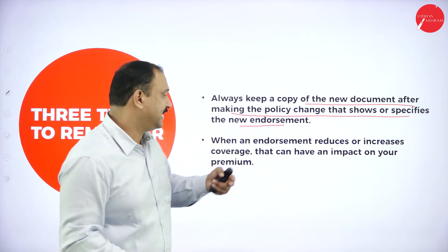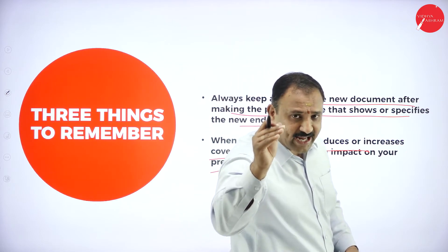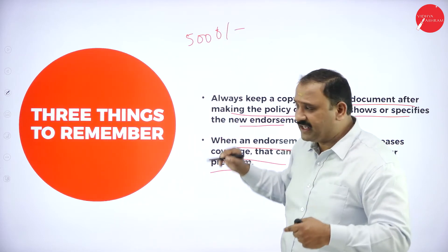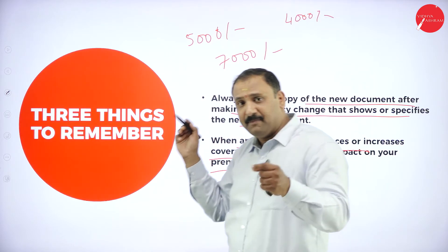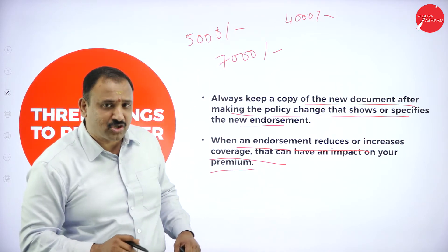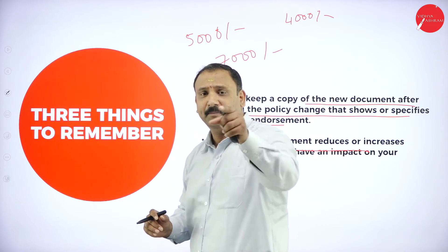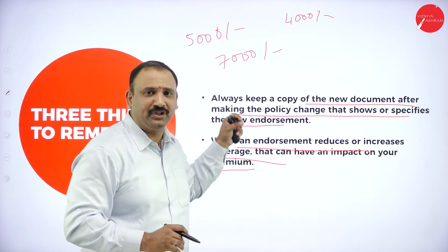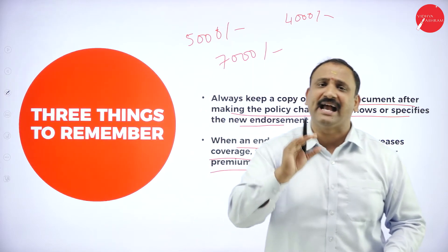When an endorsement reduces or increases coverage, it can have an impact on your premium — that is very important. For example, if you were paying 5,000 rupees a month, due to an endorsement it might increase to 7,000 or decrease to 4,000. The premium changes based on the endorsement coverage, so you should not be surprised. Keep in touch with your company and agent so that whatever changes are made, you are automatically notified.